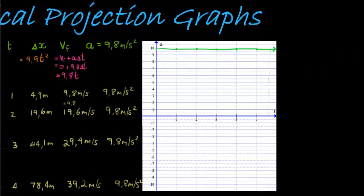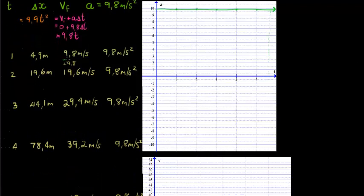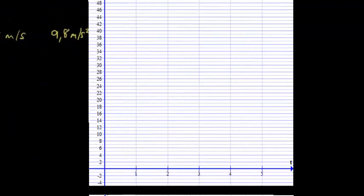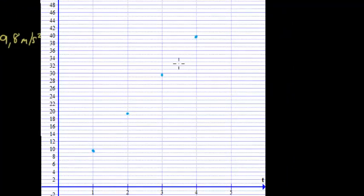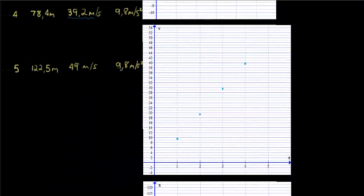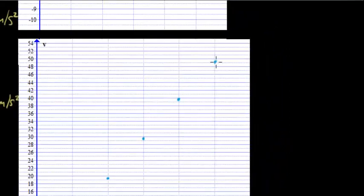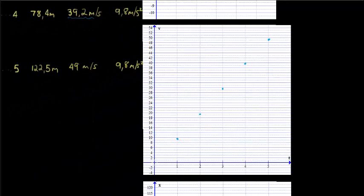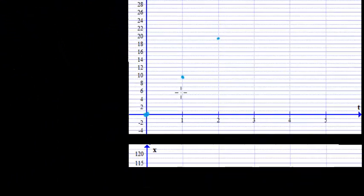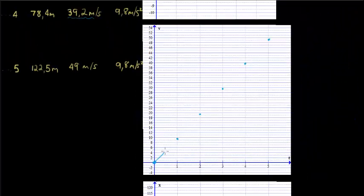Okay, so how about velocity? Let's have a look at our velocity function. Velocity we can see was first after one second at 9.8, then at 19.6, 29.4. So after one second we were at 9.8, about there. 2 seconds at 19.6. 3 seconds, 29.4. At 4 seconds we're at 39.2. And after 5 seconds we were at 49 meters per second.